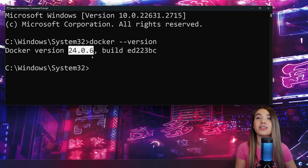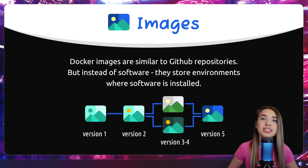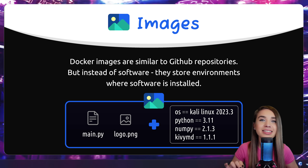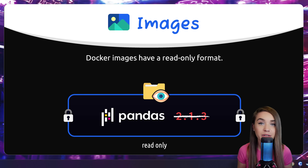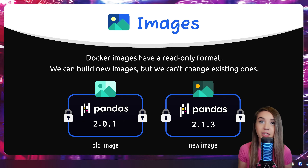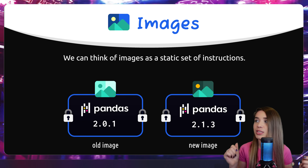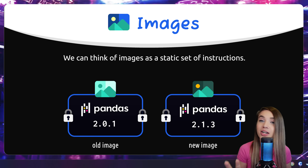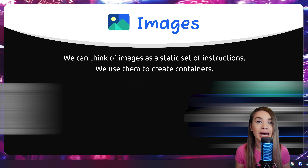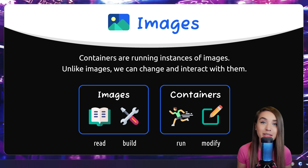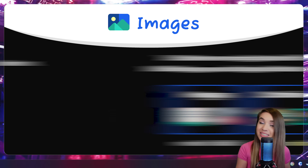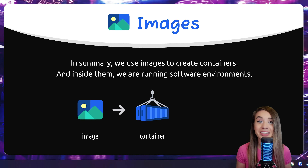Before we go any further, we need to understand the concept of Docker images. Docker images are very similar to GitHub repositories, but instead of just storing code they also store the ideal set of conditions for our code — so we are not just getting a piece of software, we are getting the environment where our software is already installed. Images have a read-only format, meaning we cannot modify them; we can build new images but we cannot change existing ones. If images are blueprints for a house, then the container is the house itself. A Docker container is a running instance of an image.